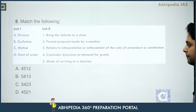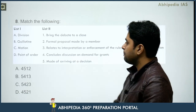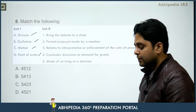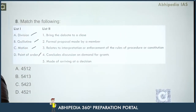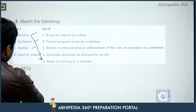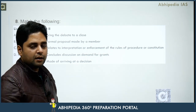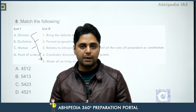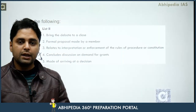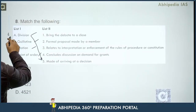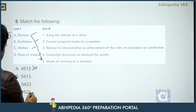Question number 8: legislative terminology matching. List one has division, guillotine, motion, and point of order; list two has their definitions. Division ka matlab hota hai the mode of arriving at a decision - yaani ki division of votes, direct voting to see kitne favor mein hain aur kitne against. So division matches with 'the mode of arriving at a decision,' which is answer five in list two. This eliminates the first and fourth options.